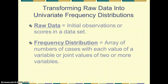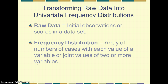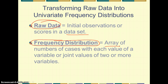We can transform raw data into univariate frequency distributions. Raw data is simply the data that comes in, usually in the form of a spreadsheet for quantitative data, in rows and columns — rows have cases and columns have variables. A frequency distribution is an array or spread of numbers of cases with each value of a variable, or joint values of two or more variables. It's just a way of visualizing the variability of values in a variable.